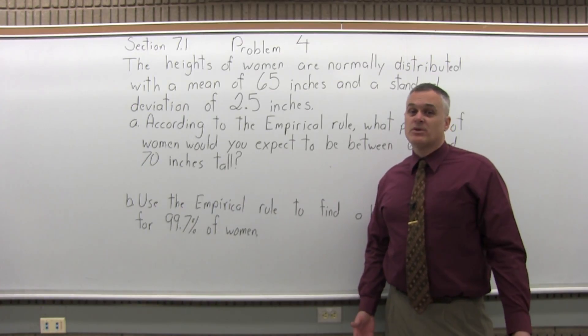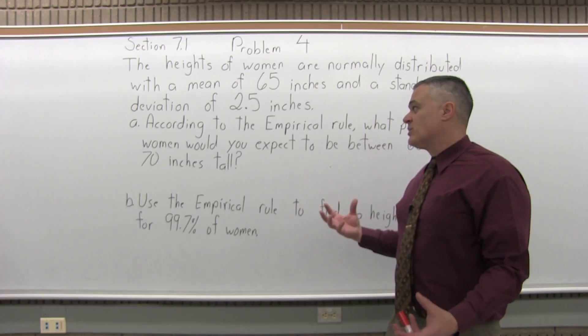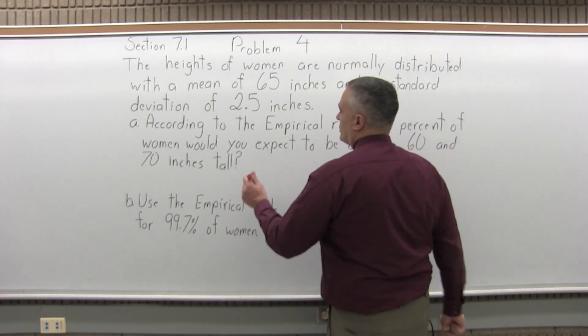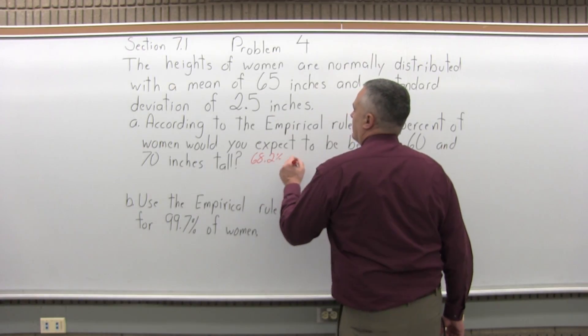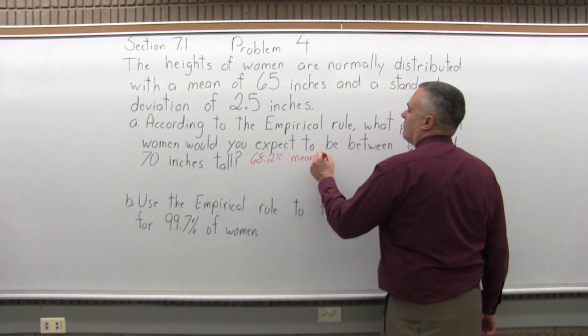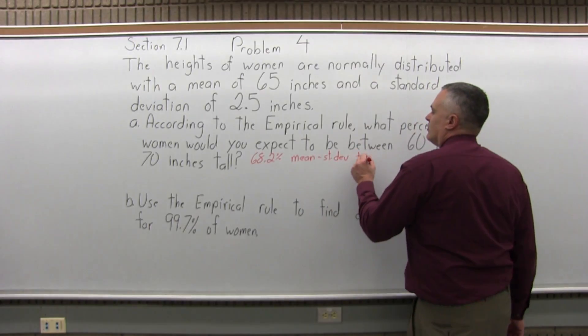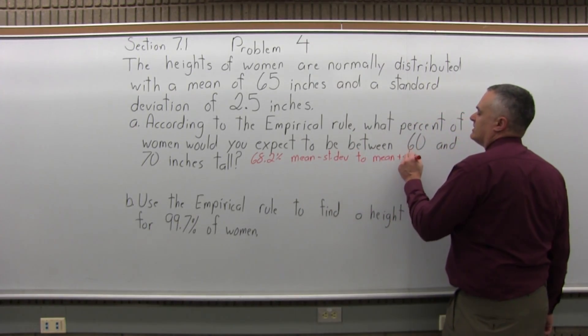When it mentions the empirical rule, the empirical rule basically gives you three intervals that you can put data in as long as it's normally distributed. You know that 68.2% of data goes from the mean minus the standard deviation to the mean plus the standard deviation.